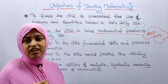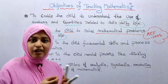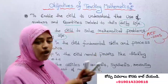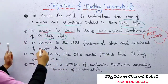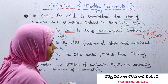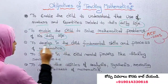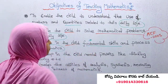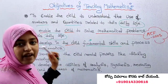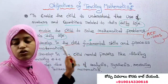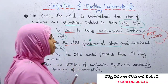Counting is an example — that is a mathematical problem in real life. When you work with it, you can ask for one pencil, two pencils, or three pencils. Working with all the objectives, the third objective is to develop in the child fundamental skills in the process of mathematics. Fundamental skills include numbers, counting, and time.